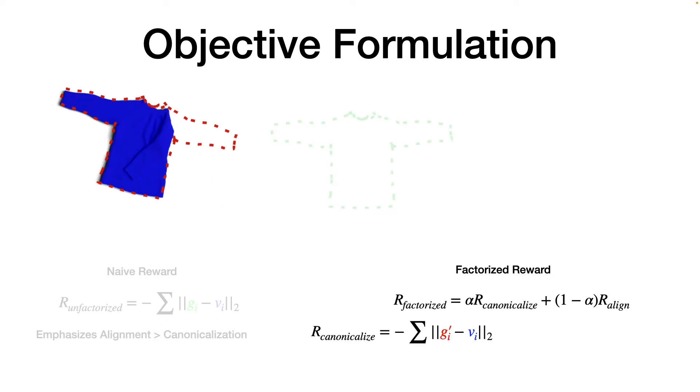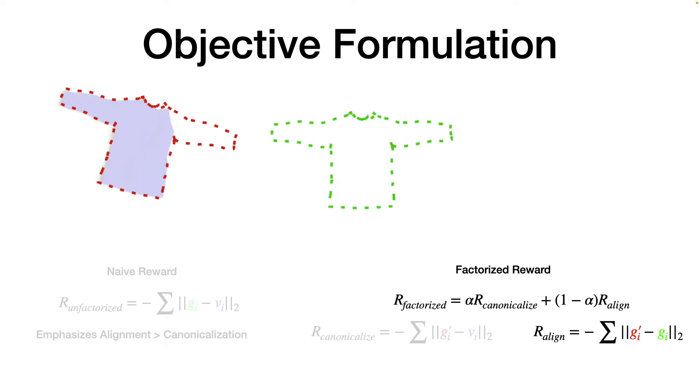Since the distance between the red configuration and the current configuration disregards cloth alignment, we use it as the canonicalization reward. Meanwhile, the distance between the red configuration and the green goal configuration disregards canonicalization, so we use this as the alignment reward.